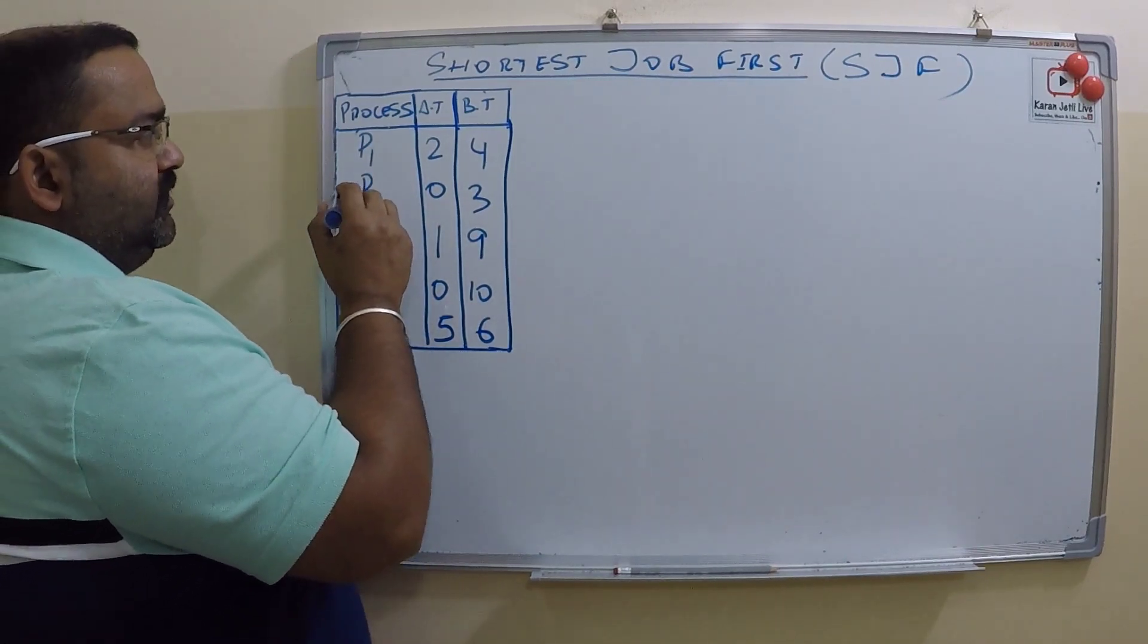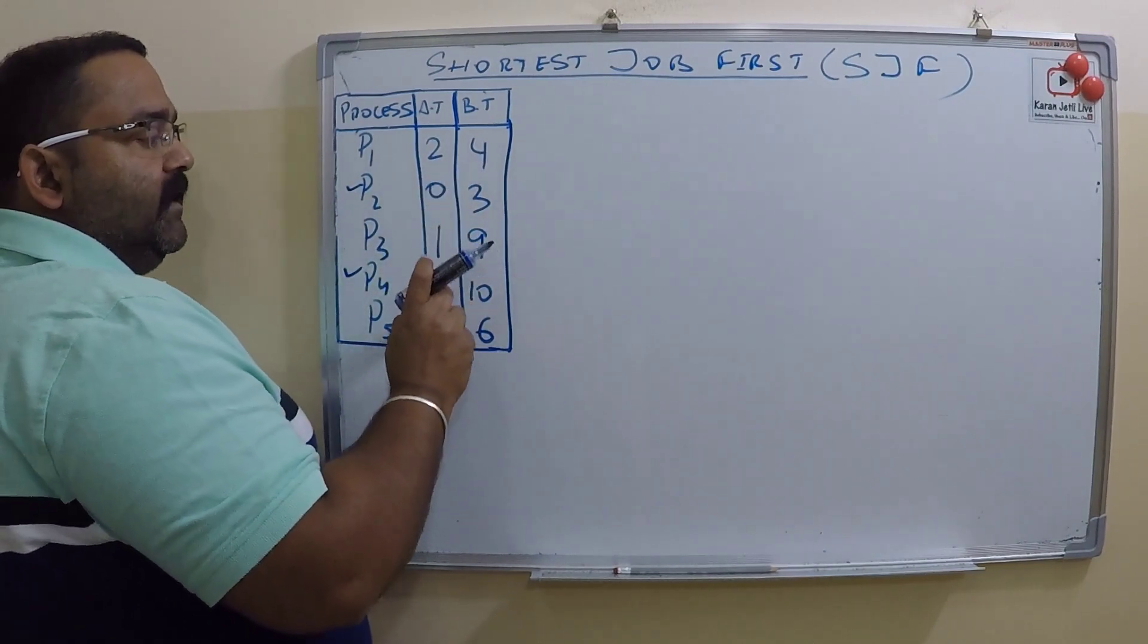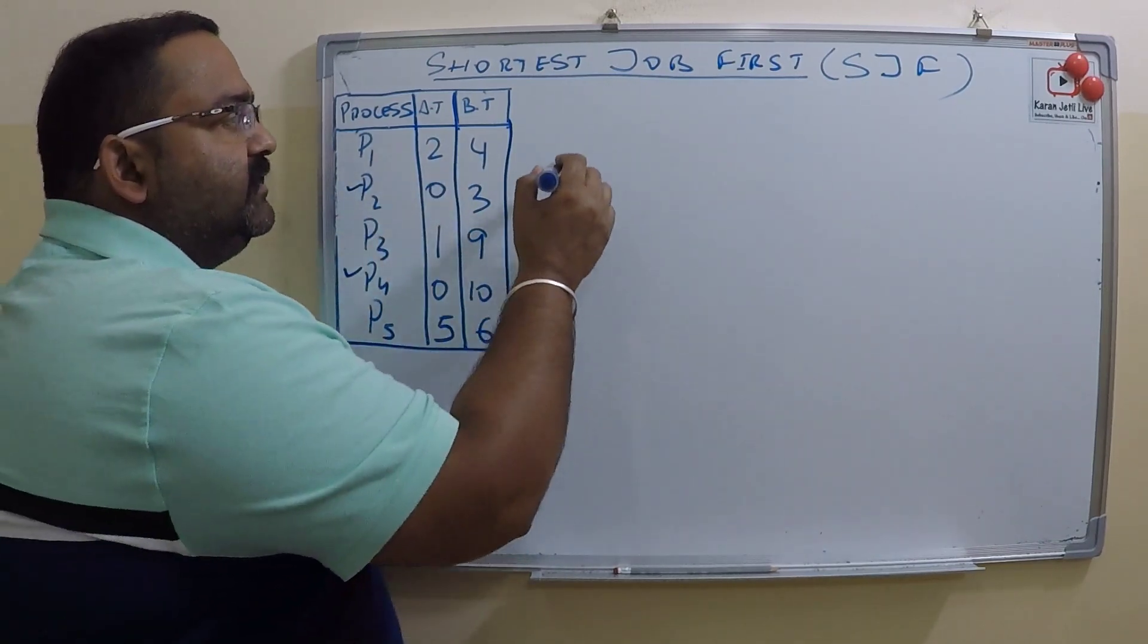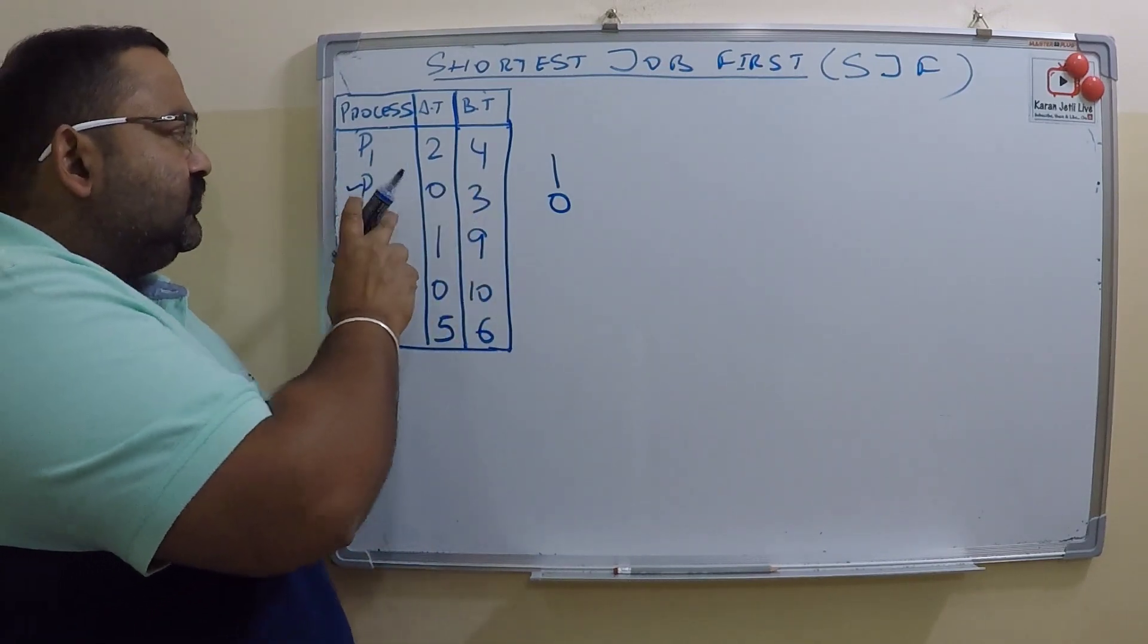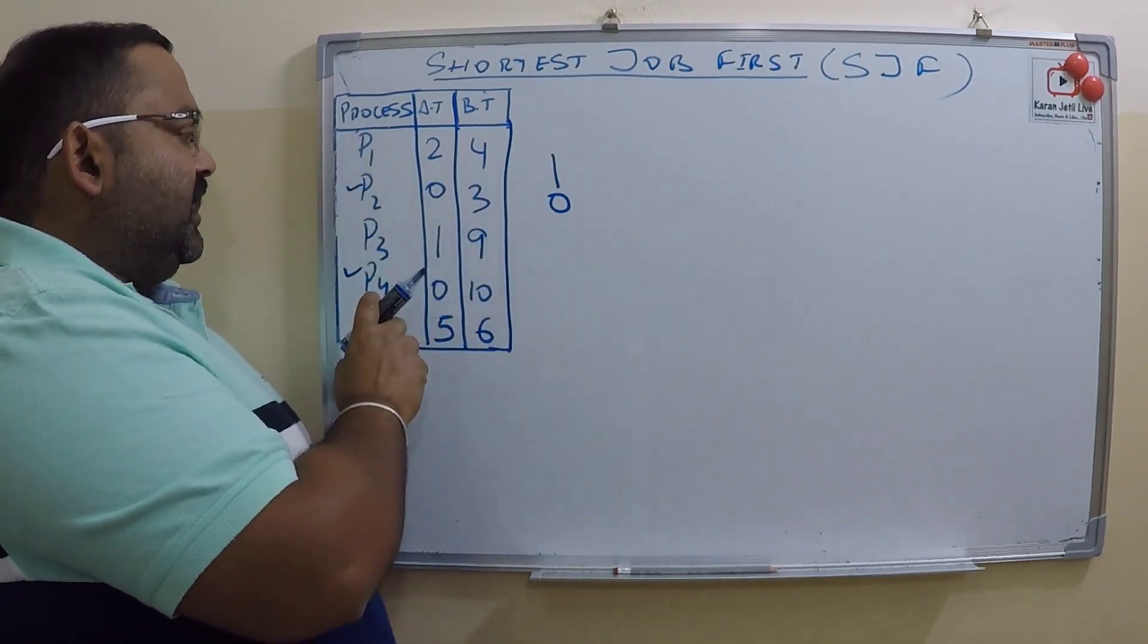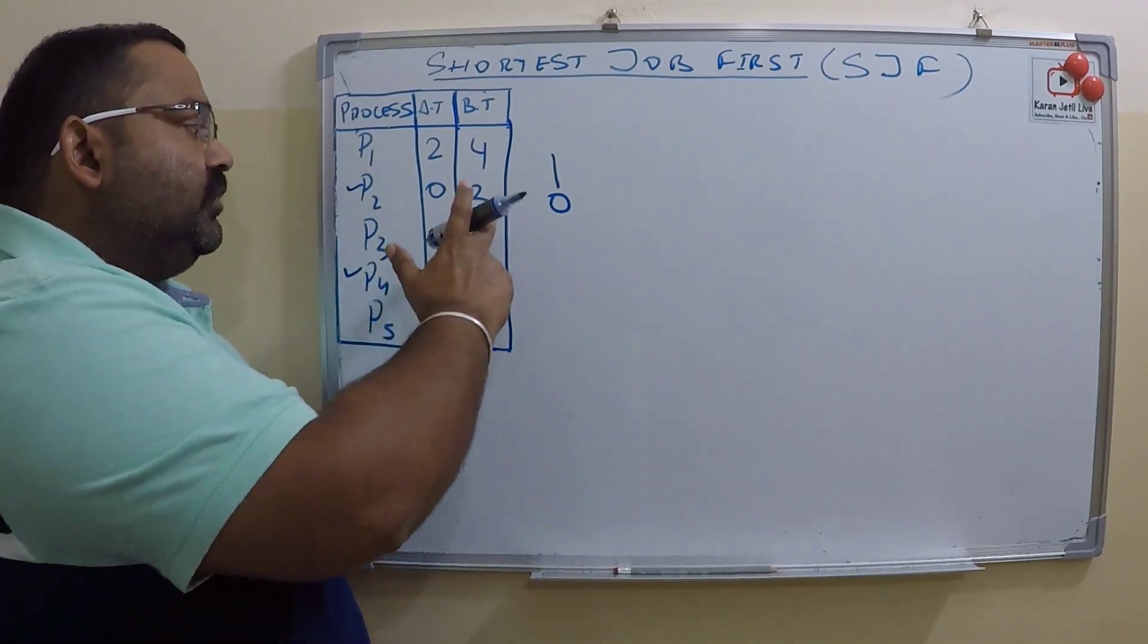They both arrive at the same time, at time zero. P2's burst is 3 and P4's burst is 10. Out of that, which job requires less time? P2 requires less time.